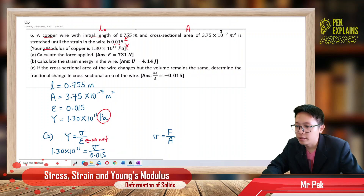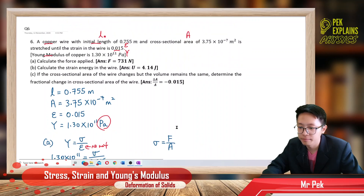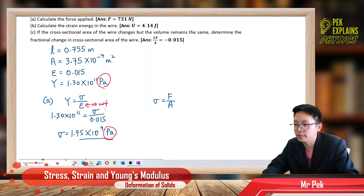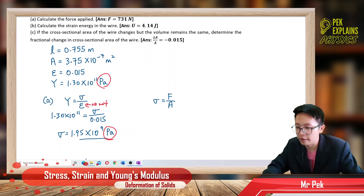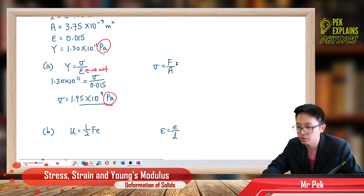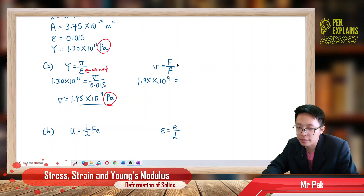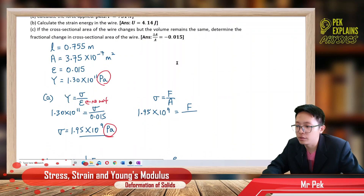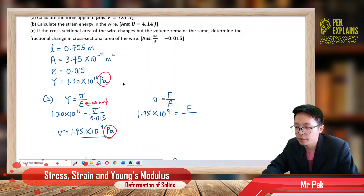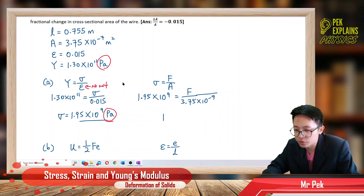I have the cross-sectional area already in meter square (SI unit). So, using stress equals force over area, I plug in: stress is 1.95×10⁹ Pascal, and area is 3.75×10⁻⁷ meter square. My force is 731.25 Newton.